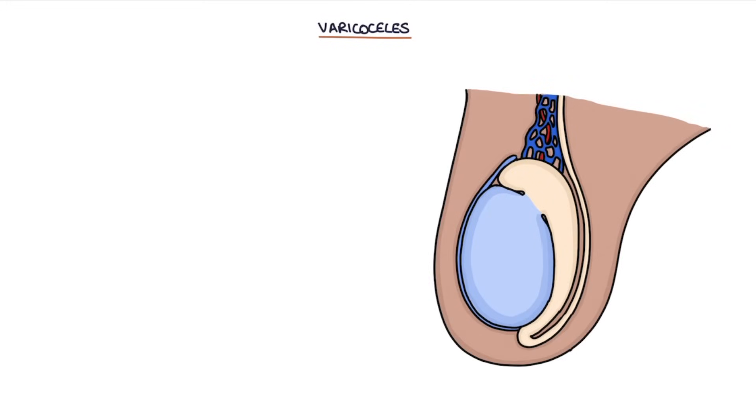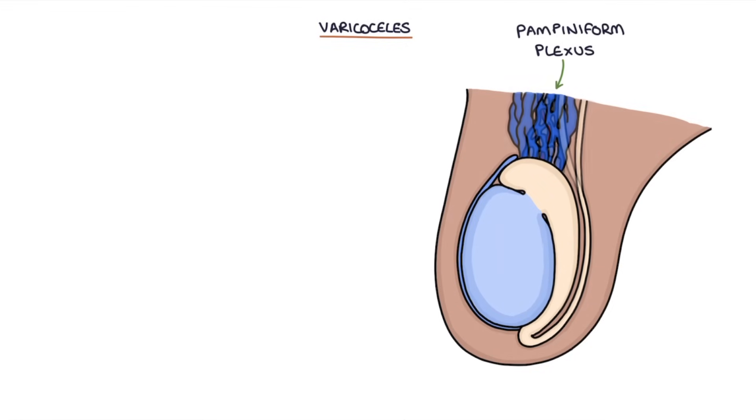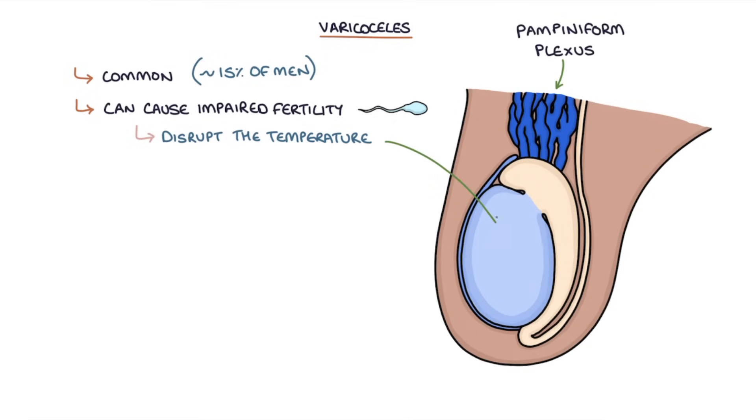A varicocele occurs where the veins in the pampiniform plexus become swollen. Varicoceles are common, affecting about 15% of men, and they can cause impaired fertility, probably due to disrupting the temperature in the affected testicle.